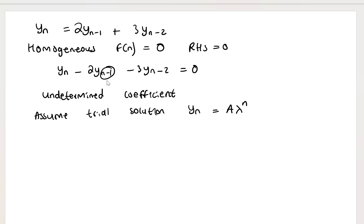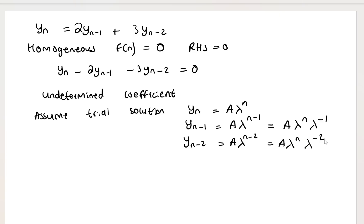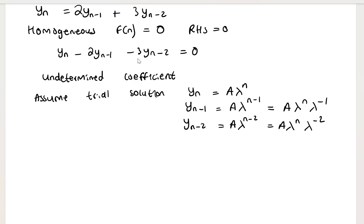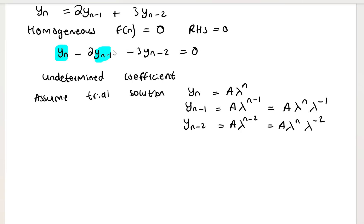Since I have n-minus-1, I must find the expression for y sub n-minus-1 by replacing n with n-minus-1, giving A·λ^(n-1), or equivalently A·λ^n · λ^(-1). Similarly, y sub n-minus-2 equals A·λ^n · λ^(-2). I'll substitute these into the equation in their respective positions.